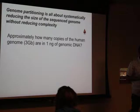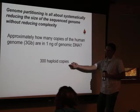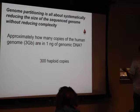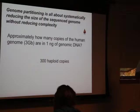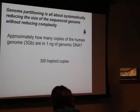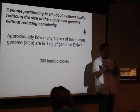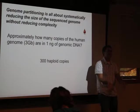To give you a feel for scale: approximately how many copies of the human genome — about three gigabases — are in one nanogram of genomic DNA? It's about 300 haploid copies. So in just one nanogram of DNA, you have 300-fold coverage of a genome on average. A lot of protocols start with vast amounts of DNA, but the key is to maintain that complexity whatever you start with.